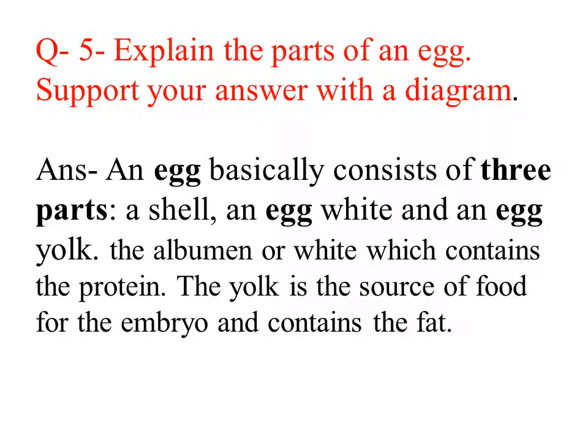Question number 5: Explain the parts of an egg and support your answer with a diagram. Answer: An egg basically consists of three parts — egg shell, egg white, and egg yolk. The albumin or egg white contains protein, while the yolk is the source of food for the embryo and contains fat.